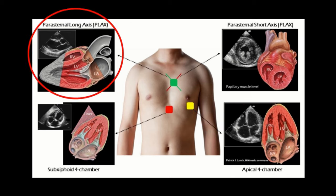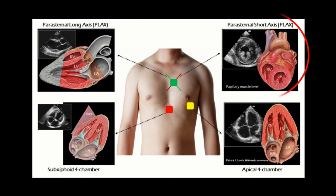For the parasternal long axis view, the echo probe is placed near the left sternal border in the third intercostal space and the direction of the orientation marker is towards the right shoulder of the patient. If we rotate the echo probe by 90 degrees to make the direction of the marker towards the left shoulder of the patient, we shall be able to see the heart in the short axis view.